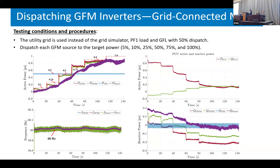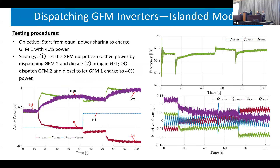The next slide shows that in grid-connected mode, all grid-forming inverters output the target power. For islanding mode, we started from equal power sharing, then had one inverter charge with a certain power. Based on the dispatch rule, this was also achieved. These results validate the dispatchability and interoperability of grid-forming inverters.